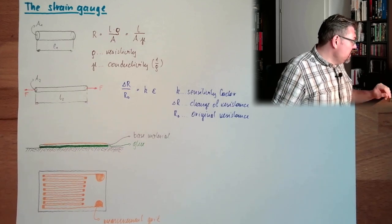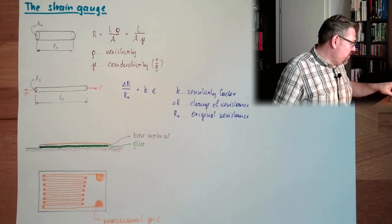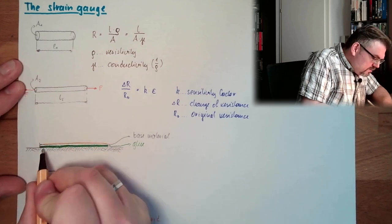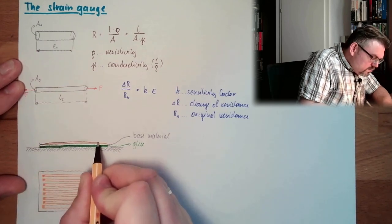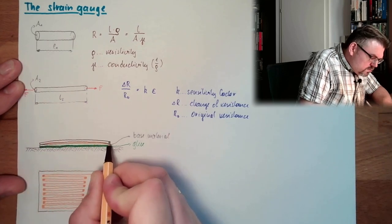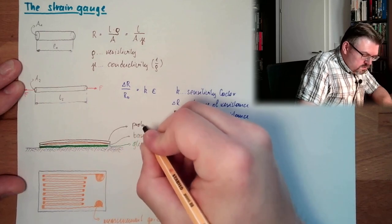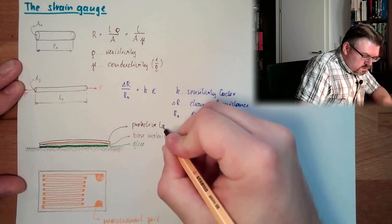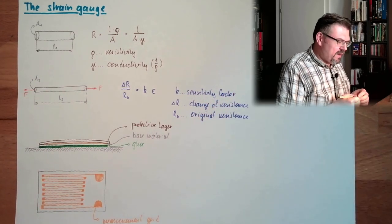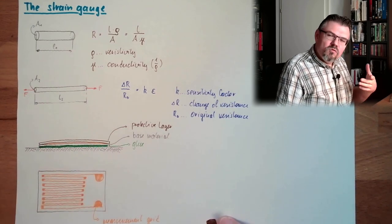However, there will also be a protective layer. So up here. Here we have a protective layer. Because this is very delicate, you know, a tiny, tiny grid. And we have this protective layer to protect this a little bit.